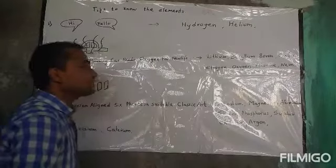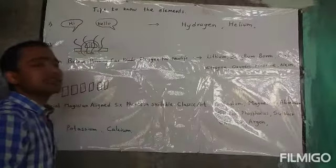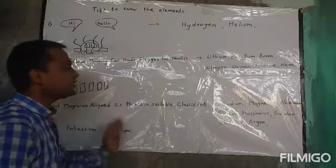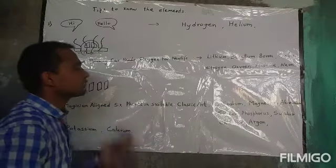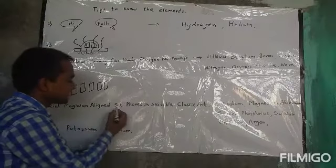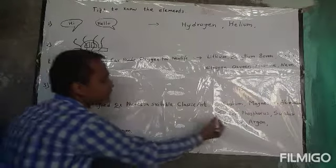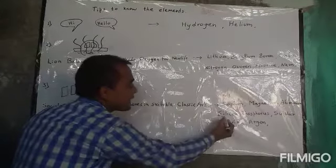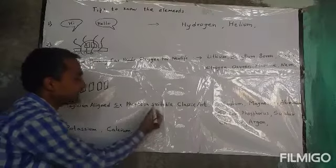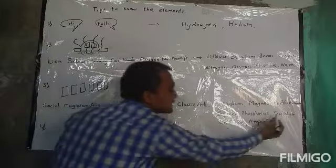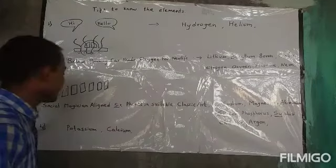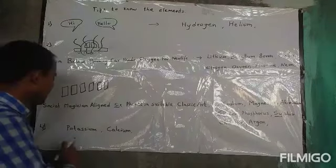Many students are confused about which one to write earlier — silicon or sulfur. Here we can use the formula: 'Si x6' — where 'Si' means silicon (S-I-L-I-C-O-N), and 'suitable' means sulfur (S-U-L-P-H-U-R). In this way we can remember the order of these elements.